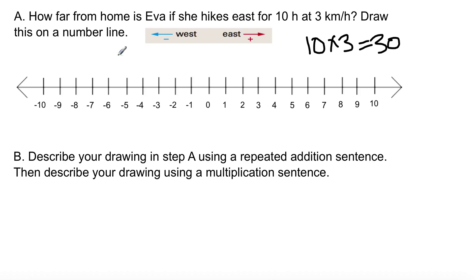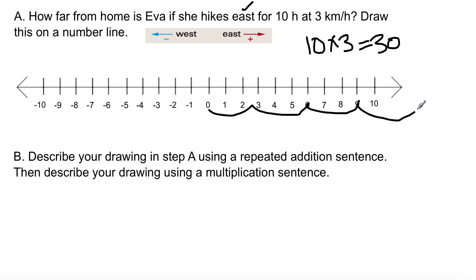She's walking east on the number line, going to the right — positive numbers. Going this way on the number line, 3 kilometers at a time. At the end of 10 hours she would have gone 30 kilometers, and that number is positive. As noted earlier, positive numbers don't require a sign — definitely not a positive sign written out.